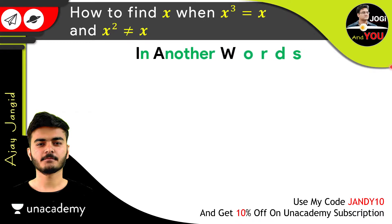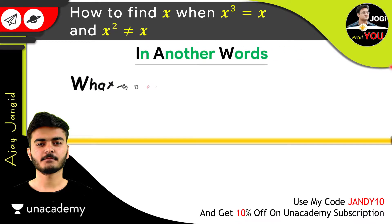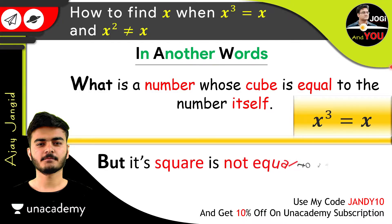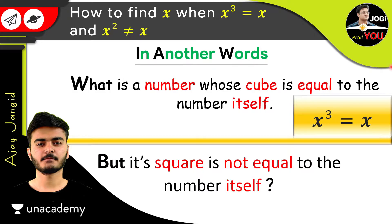In other words, we can say: what is a number whose cube is equal to the number itself? If the number is x, then x cube is equal to x. And the second condition says that its square is not equal to the number itself.